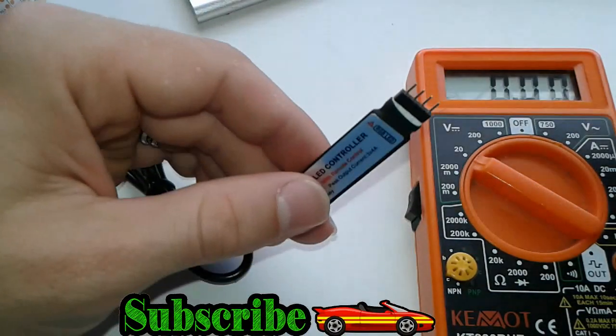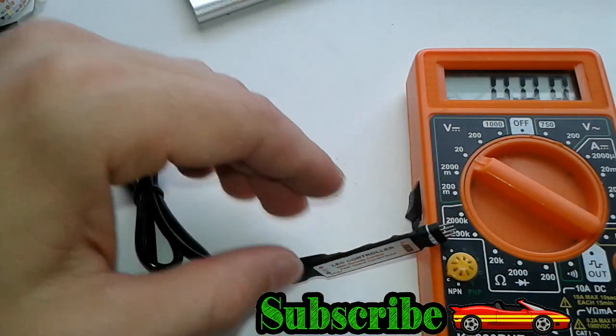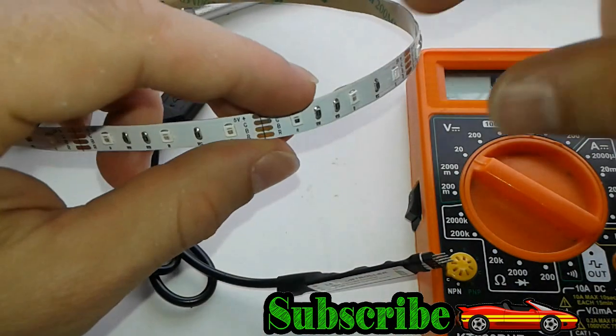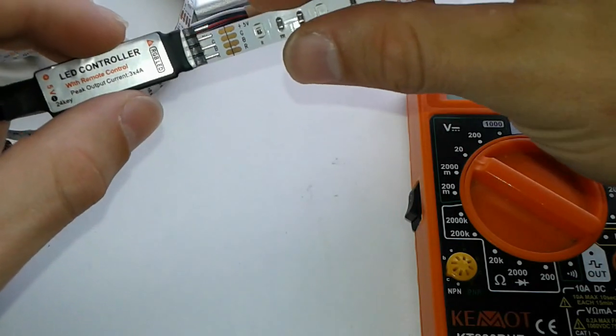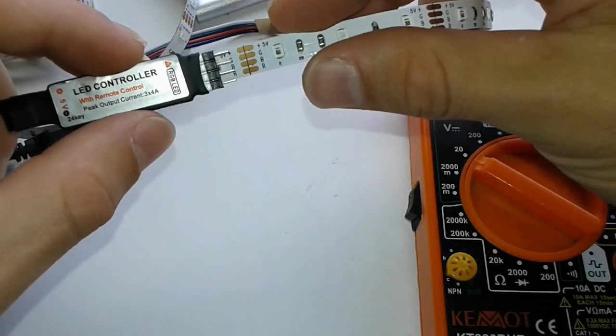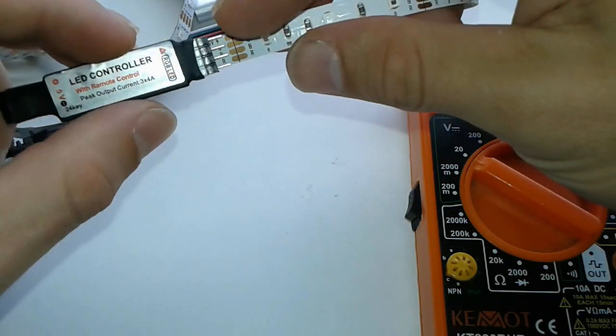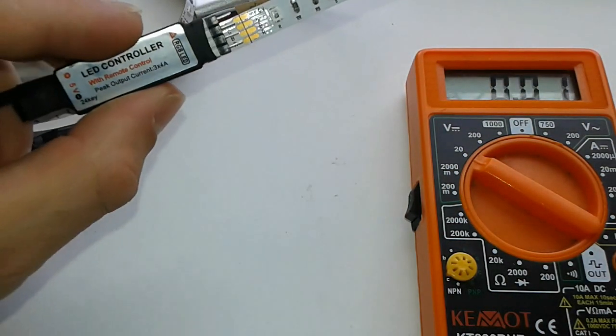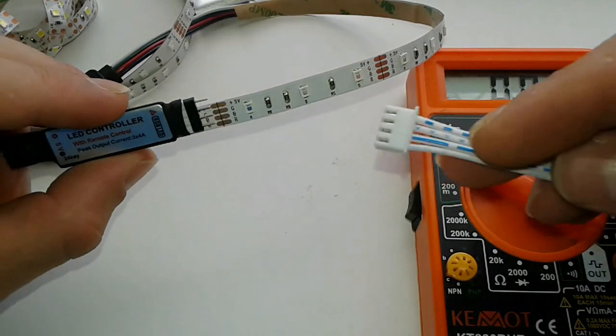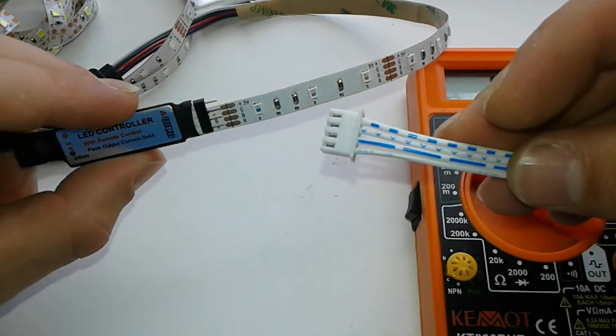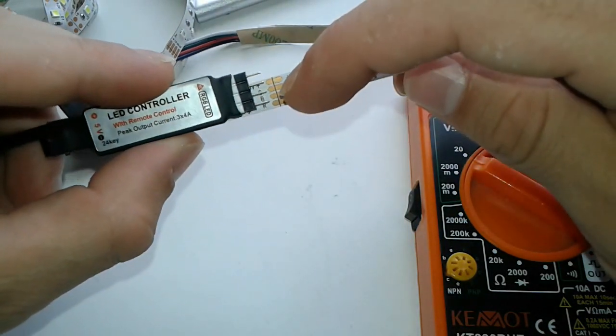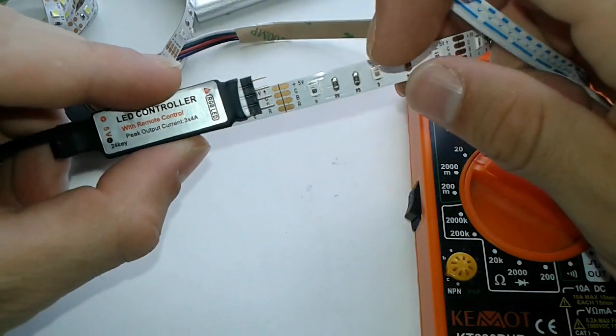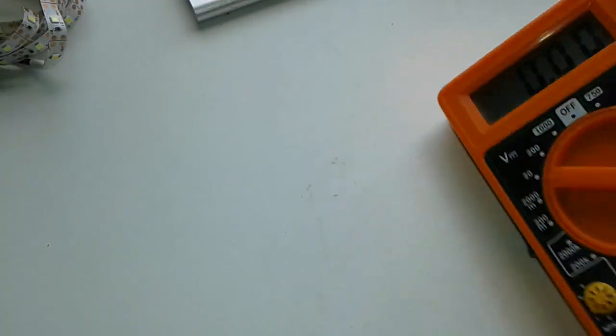As you can see here on the strip it's gonna be the plus, yeah plus G B and R, so we're gonna choose one channel and we're gonna connect our connector. This connector actually has got four pins, so it doesn't matter which one is gonna be the connection, but for you you have to keep in mind this plus and you're gonna choose one of these channels as well.